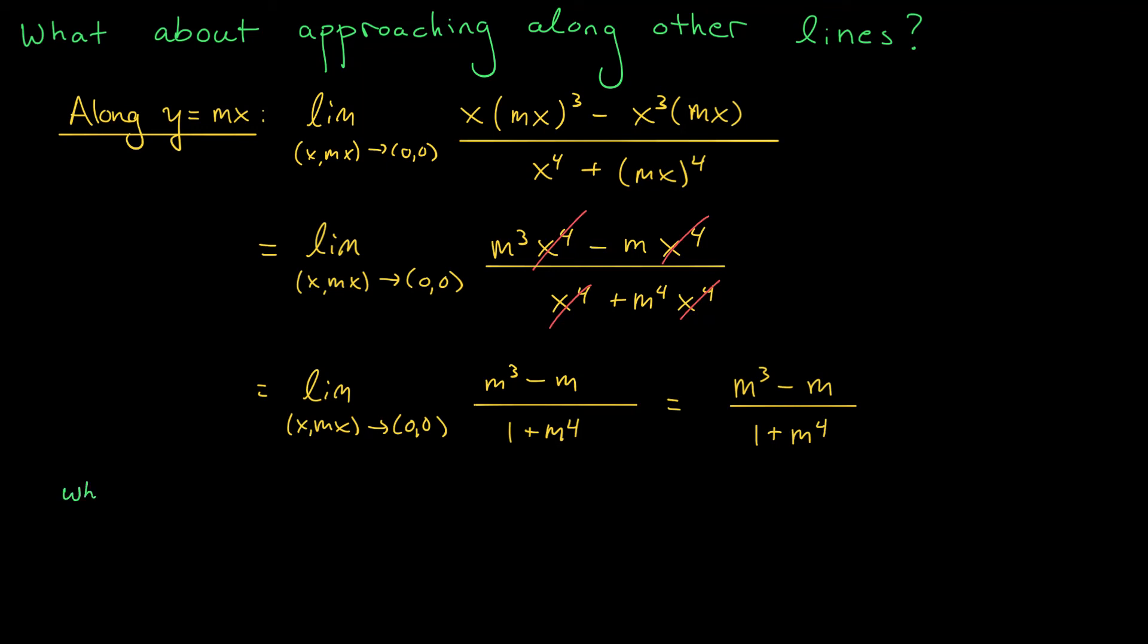So I'm going to look for these two different values of m. Why don't we take m equals 0? Actually, that gives us the line y equals 0, and on the last slide, we saw that the limit in this case is 0. If instead, I'm just going to pick a different number, we're going to pick m equals 2. Well, then that gives me a limit of 2³ minus 2, divided by 1 plus 2⁴. That's 8 minus 2, 6, divided by 1 plus 16, 17. 6 over 17.